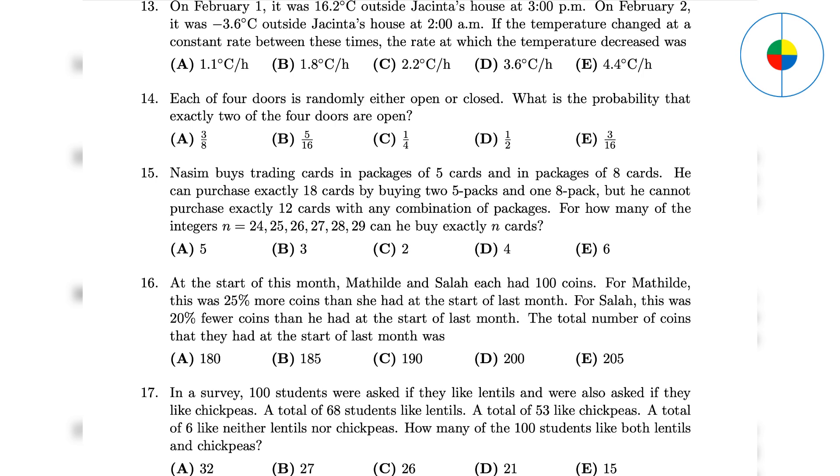Question 15 - This is a guessing game. Just try one by one, you will see that only 27 is impossible, so the answer is 5. Question 16 - This is about percentage calculation. For Matilda, the number was 100 divided by 125 percent, which is 80. For Sarah, the number was 100 divided by 80 percent, which is 125. So the answer is 80 plus 125 equals 205.